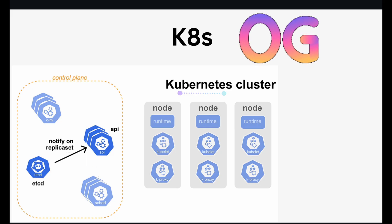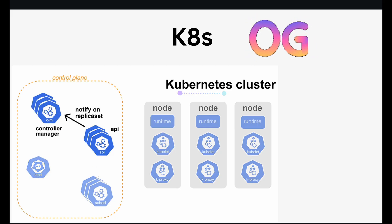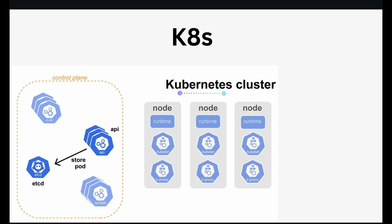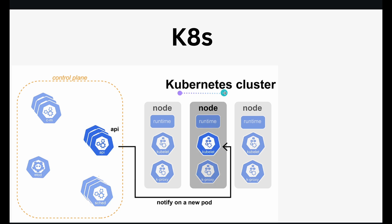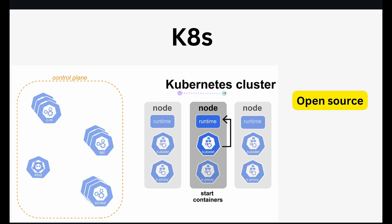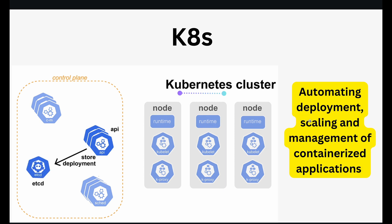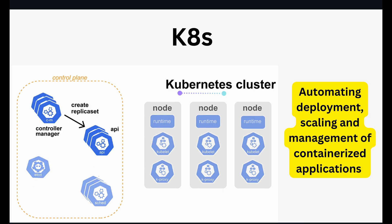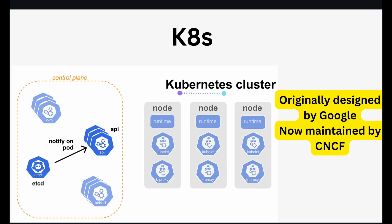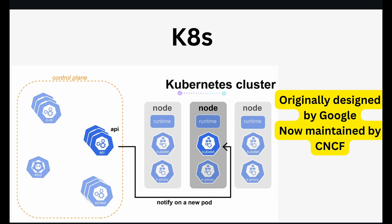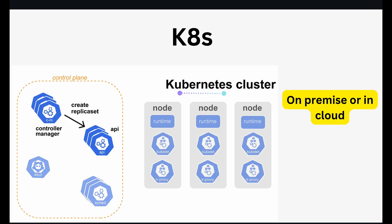Let's begin with the OG of container orchestration, K8s. It is named K8s because there are 8 letters between the K and the S of Kubernetes. It is an open-source container orchestration system for automating the deployment, scaling and management of containerized applications. It was originally designed by Google and is now maintained by the CNCF. It is designed to work in distributed systems and can be deployed on-premise or in the cloud.